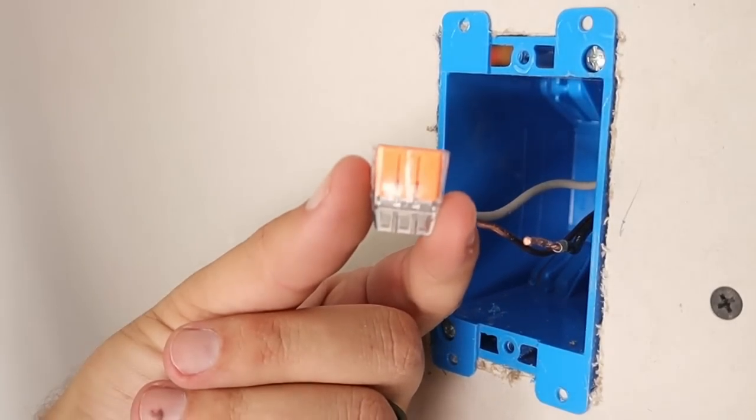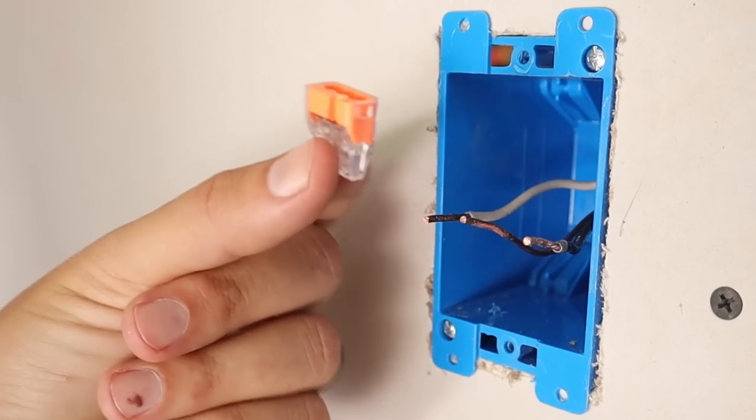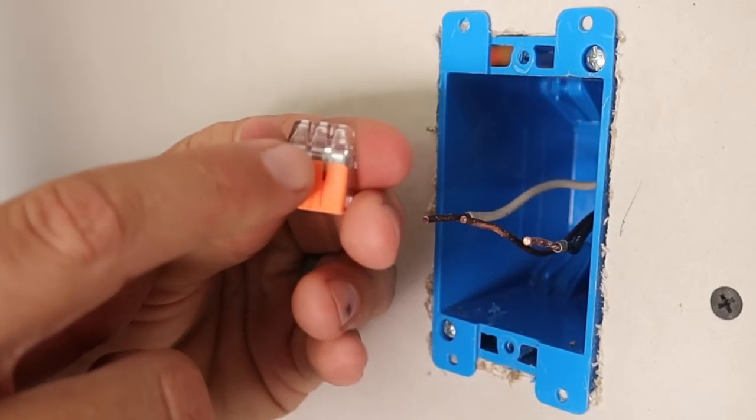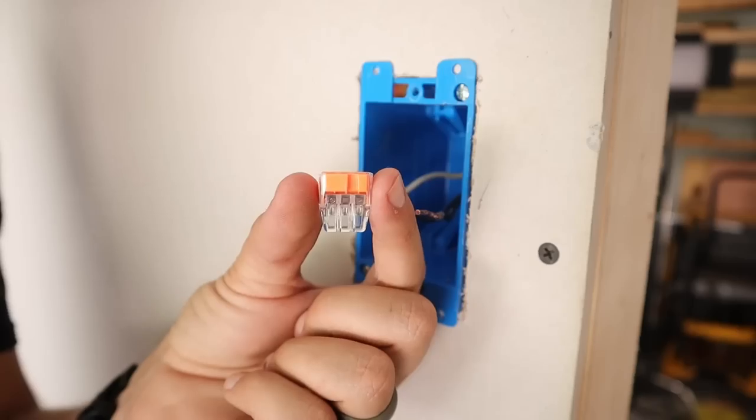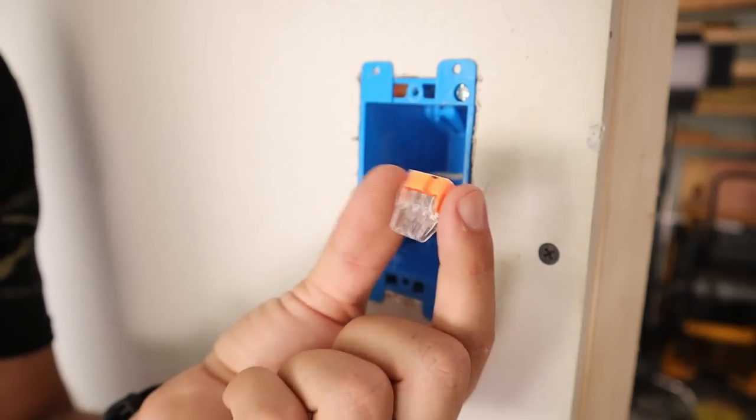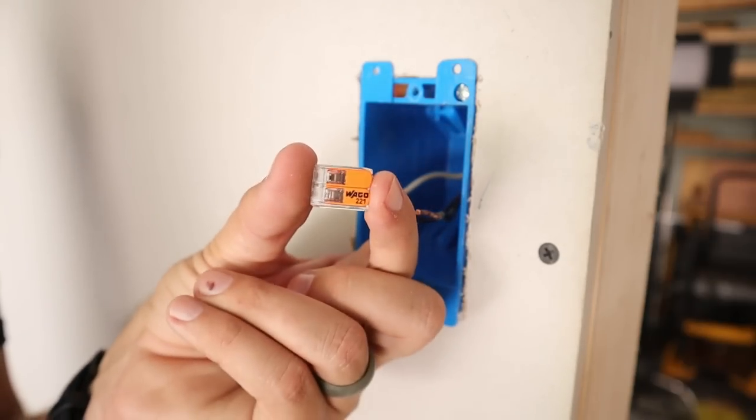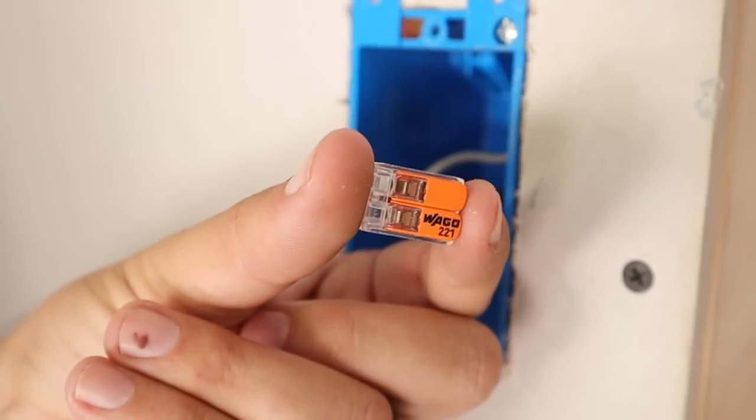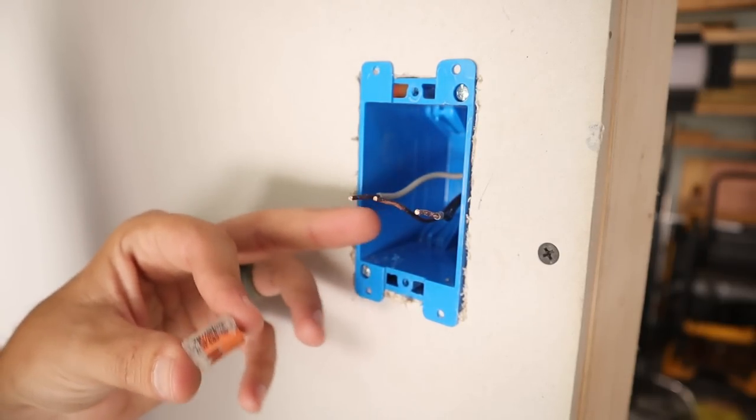And there are a bunch of options out there. One of them would be these push connects that I believe are made by Ideal, where you just push the wiring into them. Once it goes up into this clear section here, you see that metal, it crimps down on it and just holds the wire in place. I believe these can be used in certain installations, but they remind me too much of just backstabbing an outlet because they're kind of working the same way. So in this case, what I'm going to use is this Wago. Now these Wagos certainly have their place in many different installations, not every installation, but I think this is a good candidate for this particular situation.